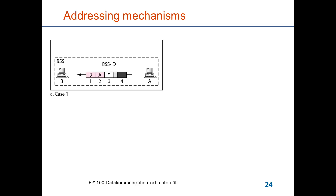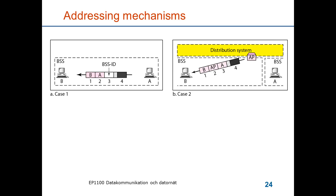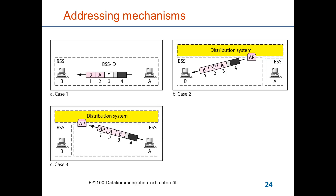The second case is a frame sent from an access point to a station in a BSS. The first address is the destination, the second address is the source address of the frame from the access point, and the original sender node A is in address field 3; address field 4 is not used. For the corresponding uplink from A to the access point with the frame destined to B, the destination is the access point, the source is A in address field 2, and the ultimate receiver B is in address field 3.